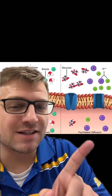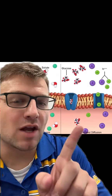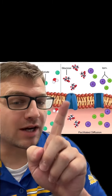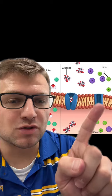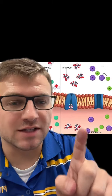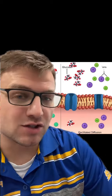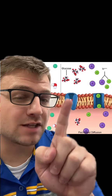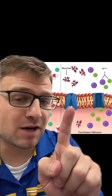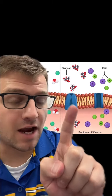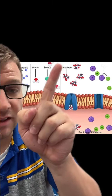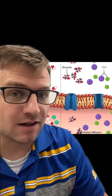And lastly, we have facilitated diffusion. This is the movement of molecules into or out of a cell using a membrane protein. You can see these large blue structures here allowing molecules into the cell. And typically, this is from high to low concentrations. So the main difference here with facilitated diffusion is it's happening through these membrane proteins. This membrane protein is called a carrier protein, while this is called a channel protein. However, both proteins allow molecules into or out of the cell.